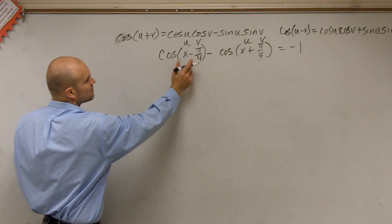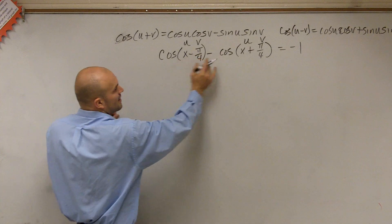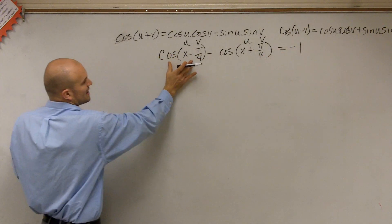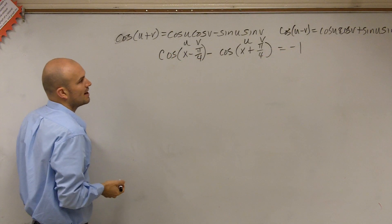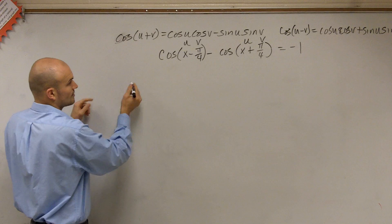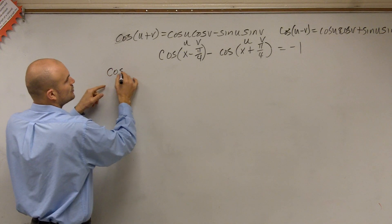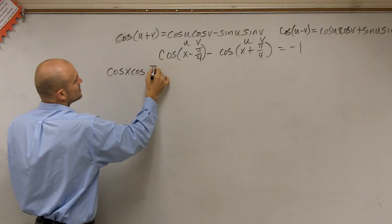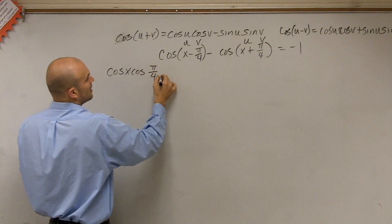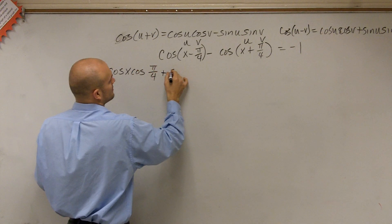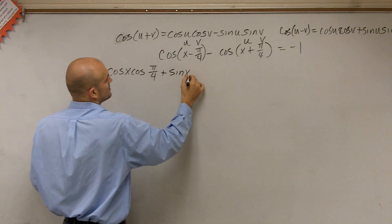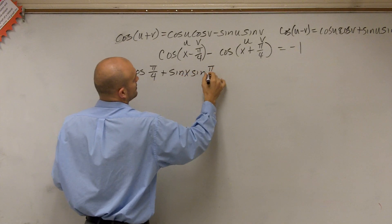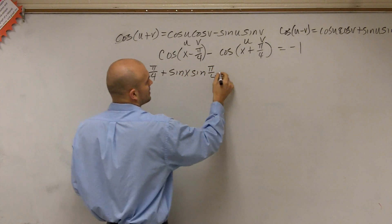So let's use the difference one first. Therefore, I'm going to use this formula to evaluate for the cosine of u, our x minus pi over 4. So by writing this out, I'll have cosine of u, which is x, times cosine of pi fourths plus the sine of x times the sine of pi over 4 minus.